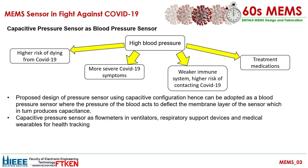Therefore, the proposed design of a pressure sensor using a capacitive configuration can be adopted as a blood pressure sensor, whereby the pressure of the blood deflects the membrane layer of the sensor, which in turn produces a capacitance reading. The capacitive pressure sensor can also act as a flow meter in ventilators, respiratory support devices, and medical wearables for health tracking. That's all from us — thank you for watching.